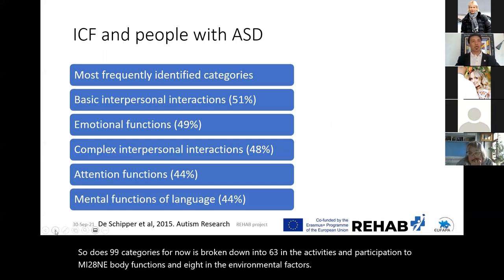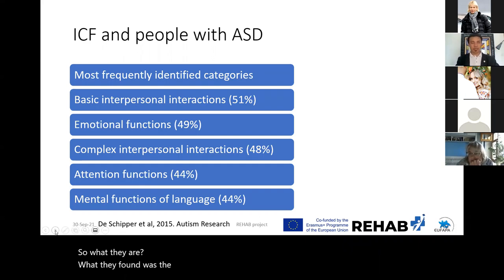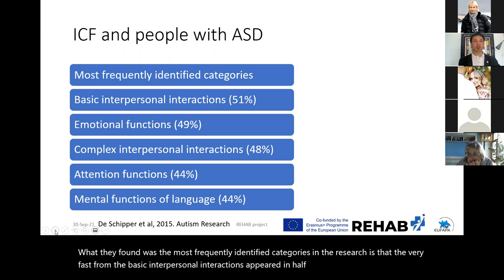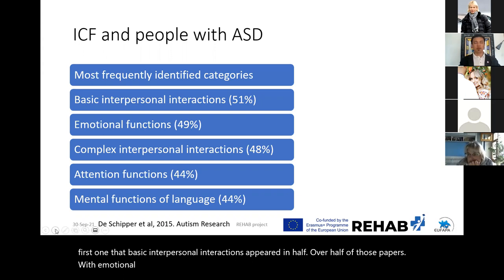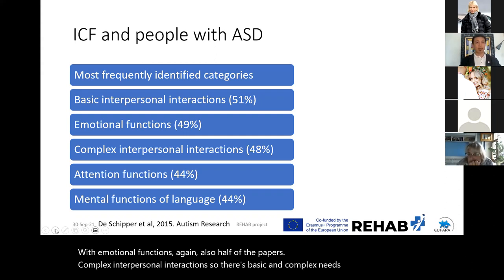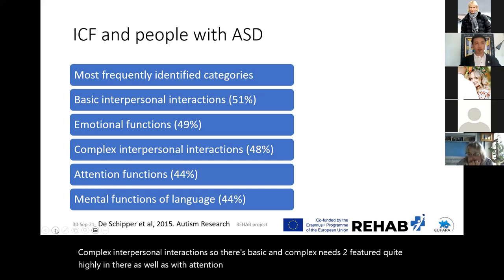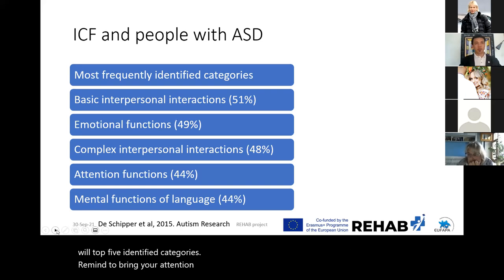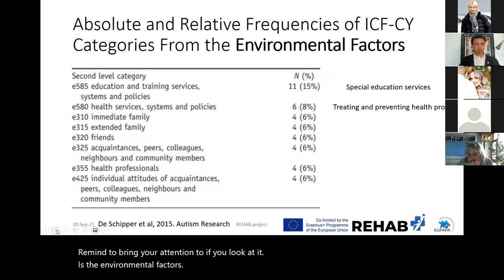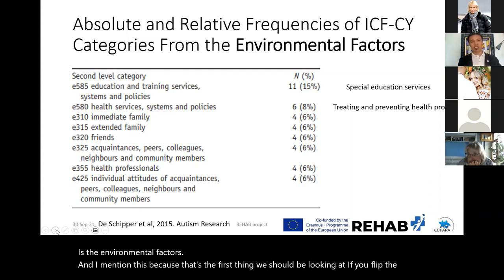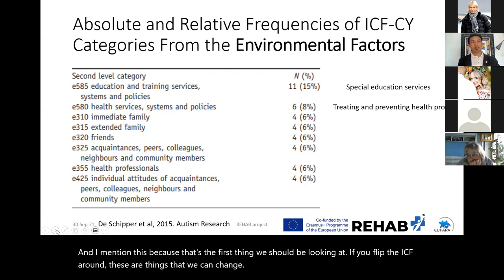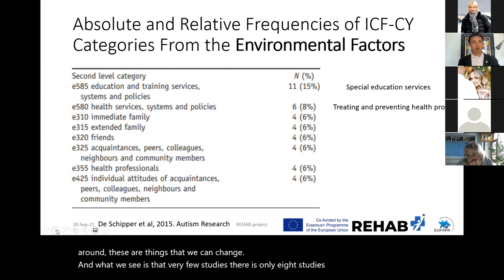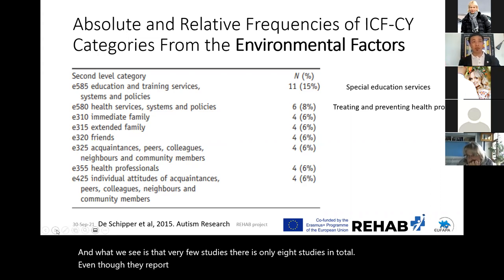The most frequently identified categories were: basic interpersonal interactions, found in over half the papers; emotional functions, also in about half; complex interpersonal interactions; attention functions; and mental functions of language — these are the top five categories. I'd like to bring your attention to the environmental factors. If you flip the ICF around, these are things we can change. Very few studies examined them — only 8 in total — and much of the evidence was based in the special education setting.